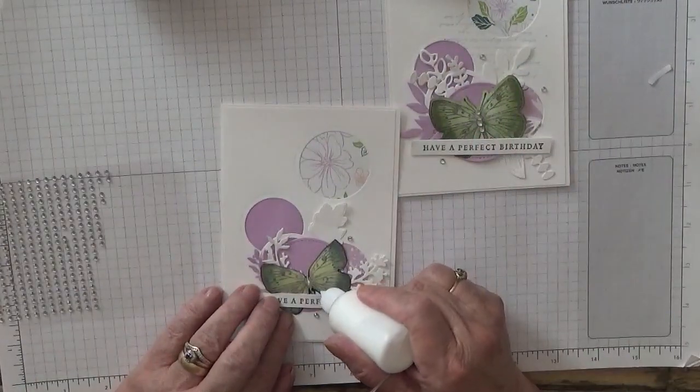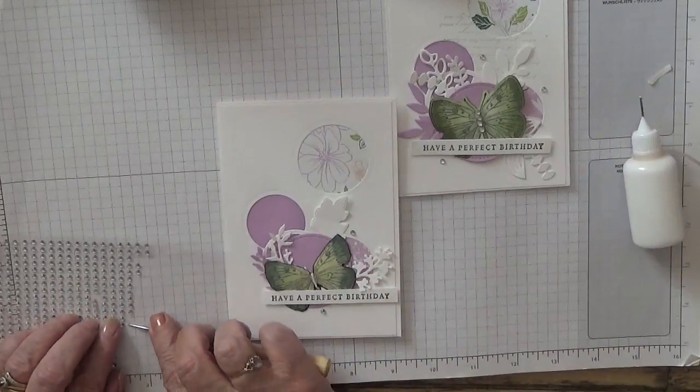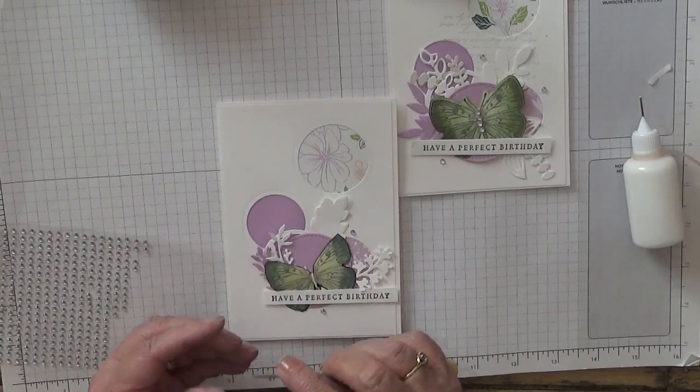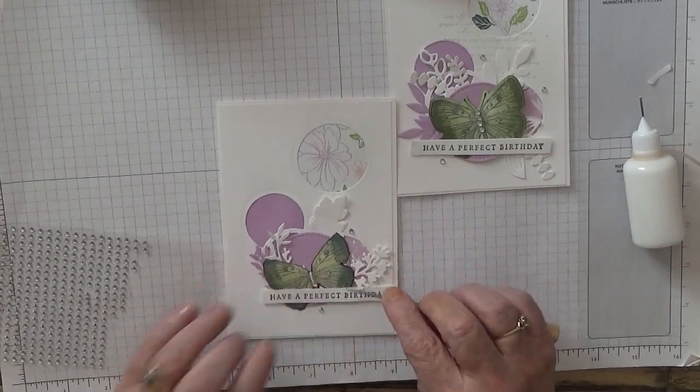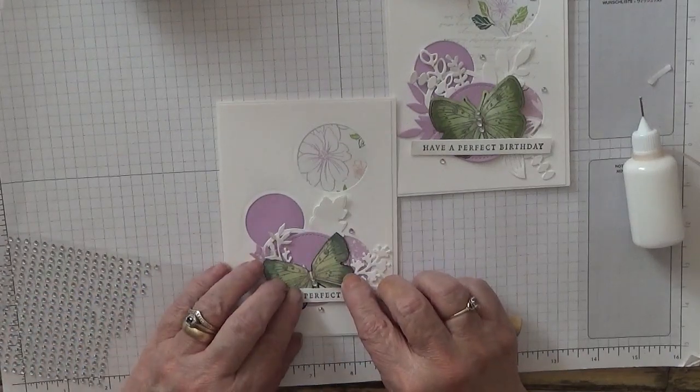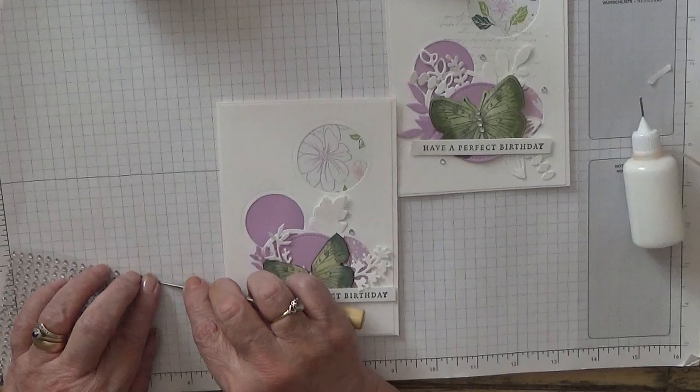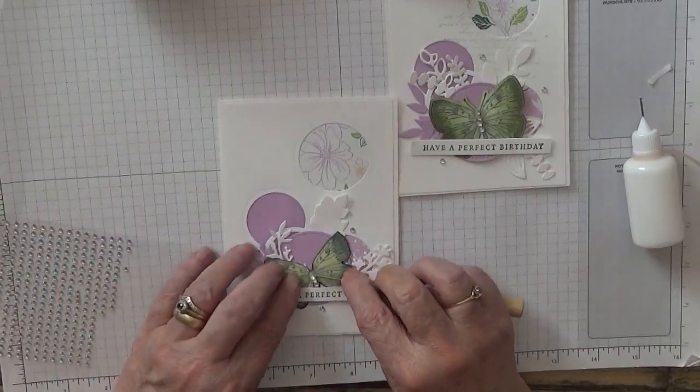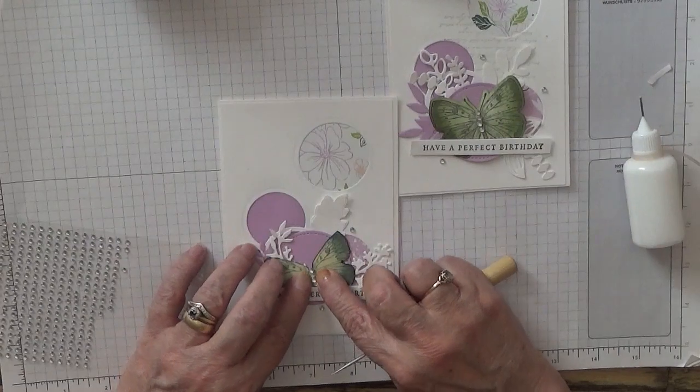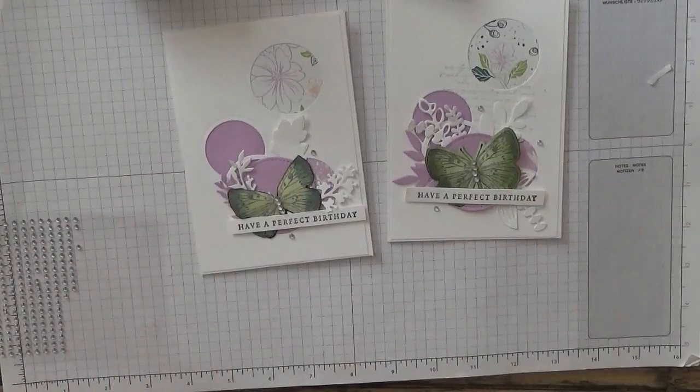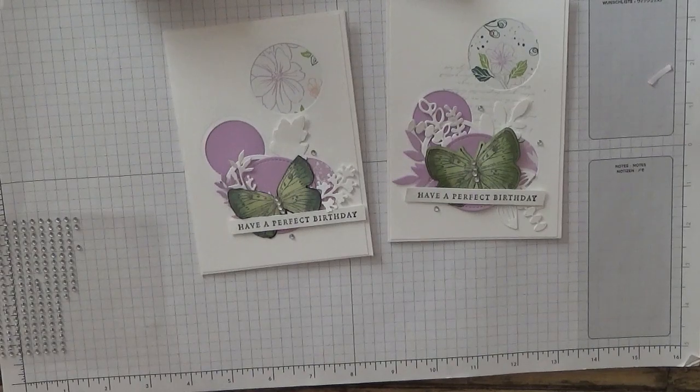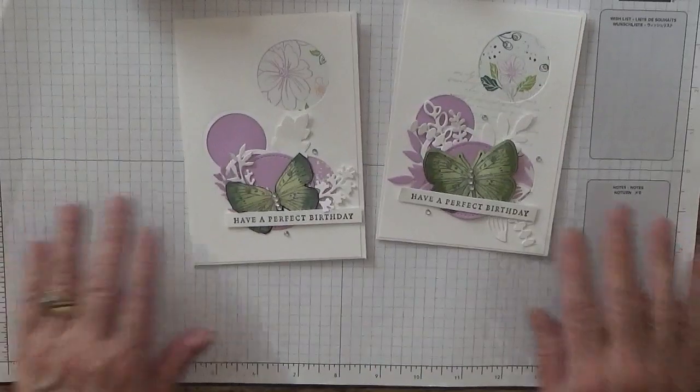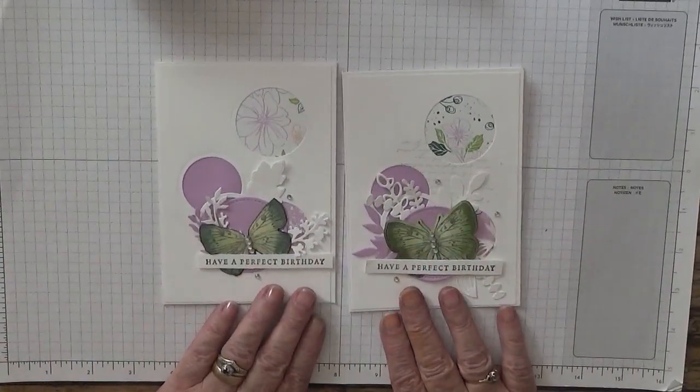There we are, let's put some gems on this one. I'm not sure, I've got glue on my finger. There's room for four on this one. There you have it, two nice little cards. I hope you like them.